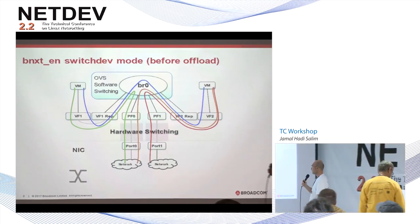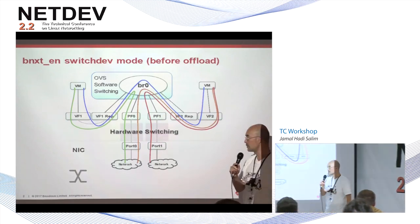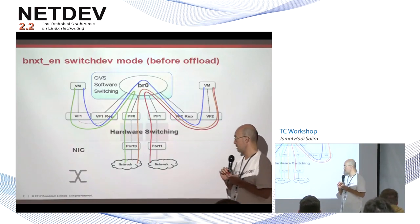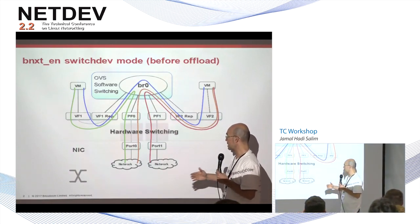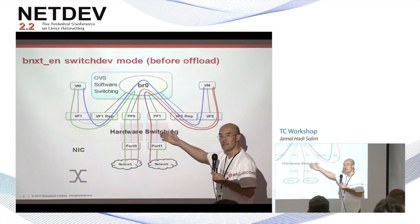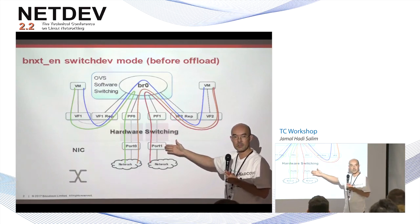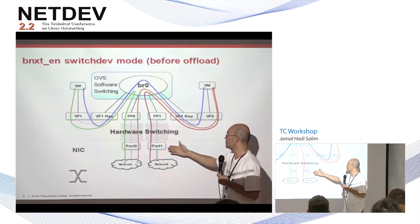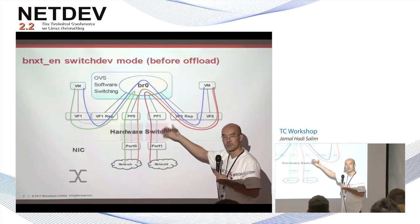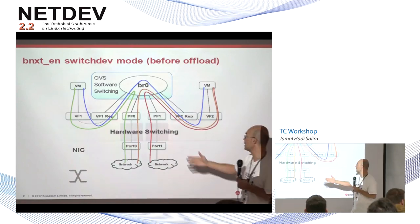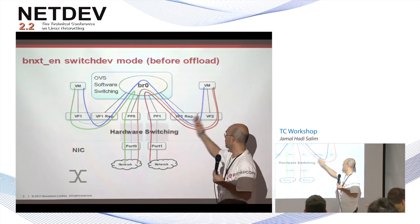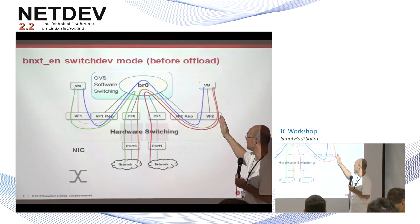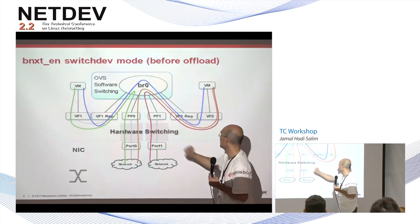From discussions in the last few days, the consensus seems to be that we need representations for the port. Currently we only have one representative for each VF. For example, ultimately we want a flow — the red one — to go directly to port one and be offloaded and fast.